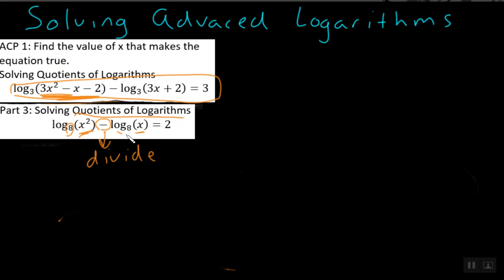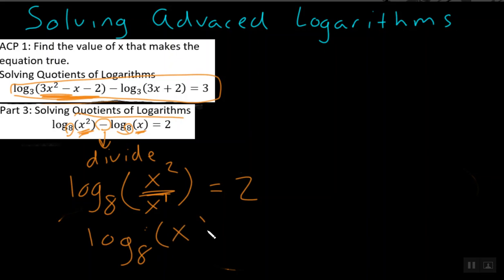So, since we both have a base 8 and a base 8, we can combine these two things as log base 8 of x squared over x. So quantity 1 divided by quantity 2 is equal to 2. Now, from here, we know that this is really x to the power of 1, and whenever you divide variables, you actually subtract the exponents. So 2 minus 1 really gives us log base 8 of x to the 1.